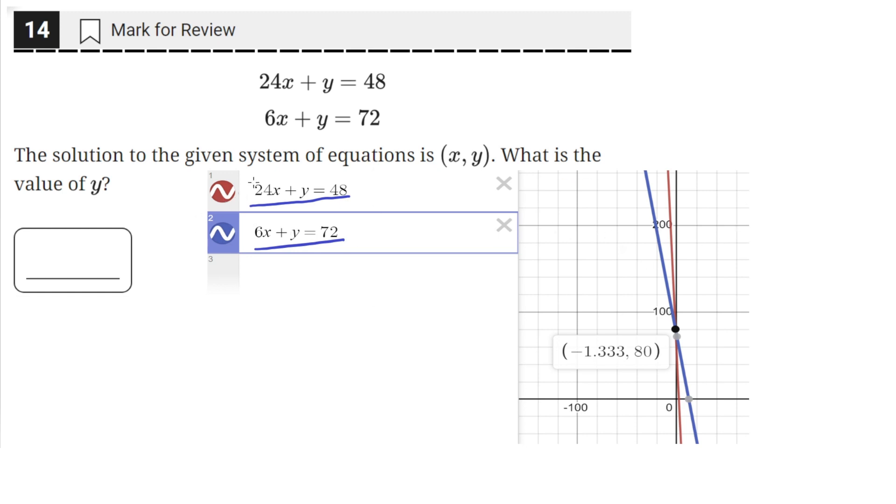So the red line is the first equation, and the blue line is the second equation. And then we can just click on where they intersect. Once you're in Desmos in the testing application, you can zoom in to make sure that they actually intersect here.